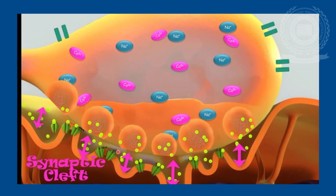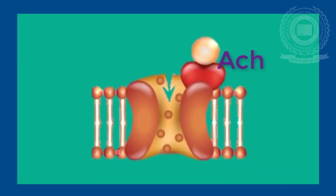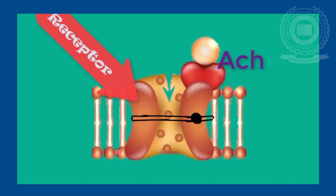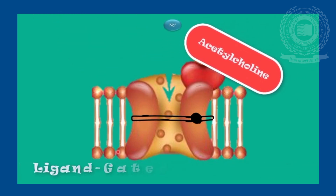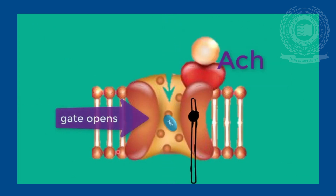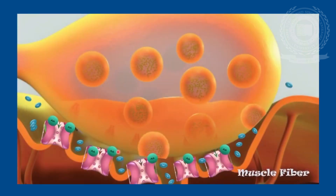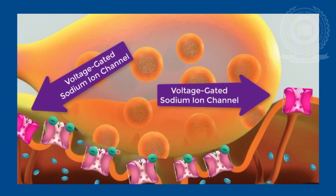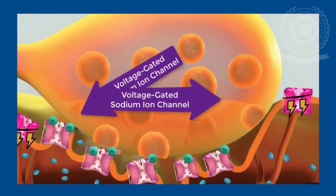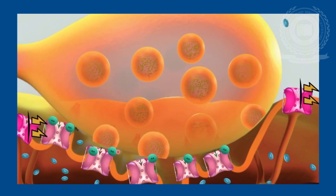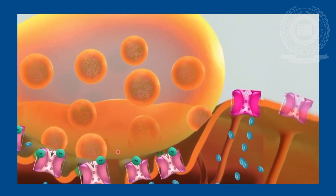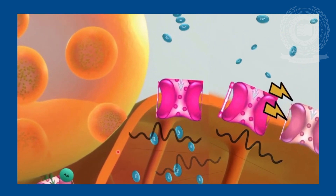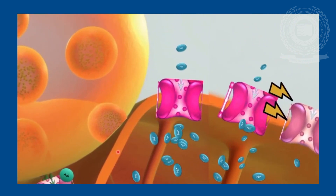Acetylcholine, once released, passively diffuses across the synaptic cleft. These molecules then bind to nicotinic acetylcholine receptors located on the muscle fiber — they are ligand-gated sodium channels. When acetylcholine binds to these receptors, the ion channels open and sodium floods into the muscle fiber. Sodium is a positively charged ion, so its influx causes depolarization. If sufficient depolarization occurs, nearby voltage-gated sodium channels open, leading to further influx of sodium ions. This is how neuromuscular transmission occurs.